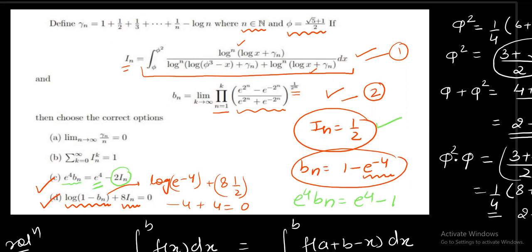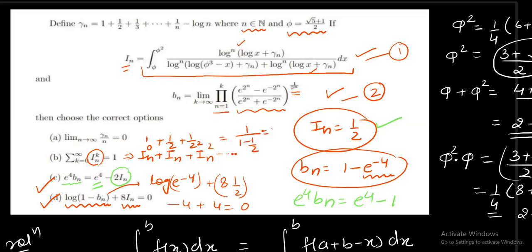Coming to option C: check e^(4Bₙ). e^(4Bₙ) = e^(4(1−e⁻⁴)) = e^(4−e⁻⁴·4) = e^(4−4e⁻⁴). Since 2Iₙ = 1, we can write it as e^(4−2Iₙ·... ) — specifically, e^(4Bₙ) = e^(4−2Iₙ) ... checking: e^4 minus 1 can be written using 2Iₙ = 1, so e^(4Bₙ) = e^(4−2Iₙ). Option C is correct.